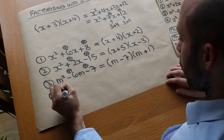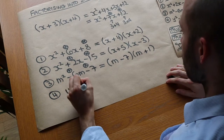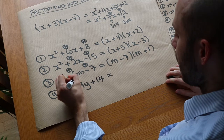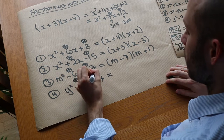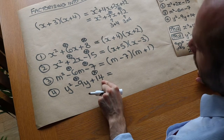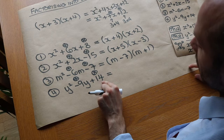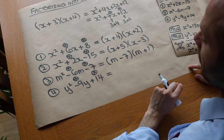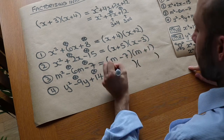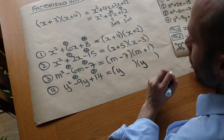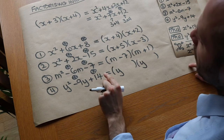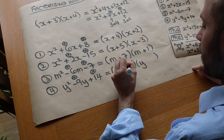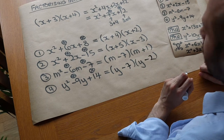Fourth example: y squared minus 9y plus 14. We need two numbers that add to give minus 9 and multiply to give positive 14. Since the product is positive but the sum is negative, both numbers must be negative. 14 is 7 times 2, and minus 7 plus minus 2 gives minus 9. So the factorisation is (y − 7)(y − 2).